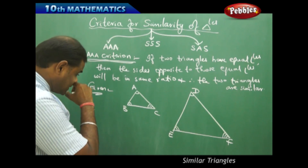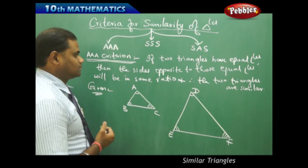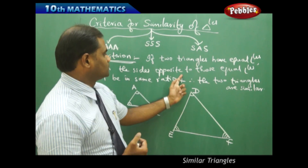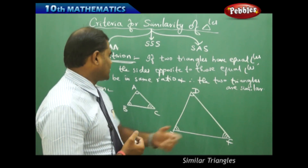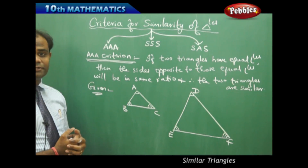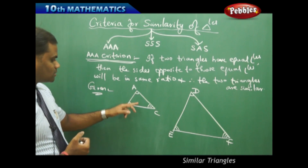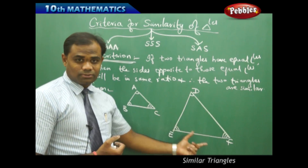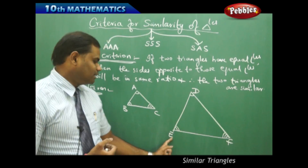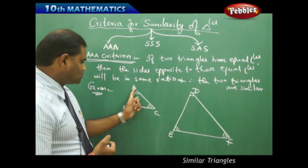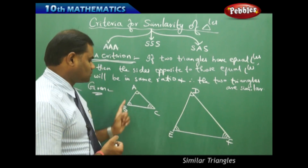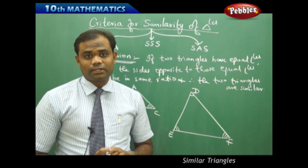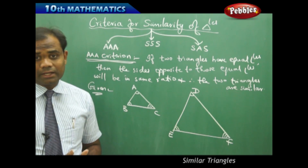When the corresponding angles are equal, the theorem states that the sides opposite those equal angles will be in the same ratio. That is, BC/EF = AC/DF = AB/DE, which we are going to prove using the corresponding equal angle properties.